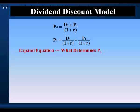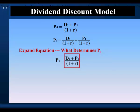Now let's expand the equation by asking what determines P1, the stock price at year 1. The buyer of the stock at year 1 will look over his investment period at the dividend he'll receive in year 2 and the terminal price he'll receive at the end of year 2. The buyer will pay no more for this stock than the present value at year 1 of this dividend and this terminal price. So the price at year 1 is equal to the year 2 dividend, plus the year 2 terminal price, discounted back 1 year to year 1.